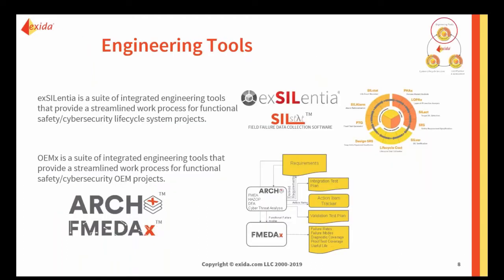Exeter's engineering tools group created a suite of tools from the very early days for systems-level functional safety analysis. Those tools have grown into an entire suite called Exellentia and Silstat. Exellentia is a project lifecycle tool covering process hazards analysis through design, verification, requirements, proof test generation, and field failure data collection. For OEMs doing new product development, there's also ArcX and FMEDAX, which we'll be using in our examples today.